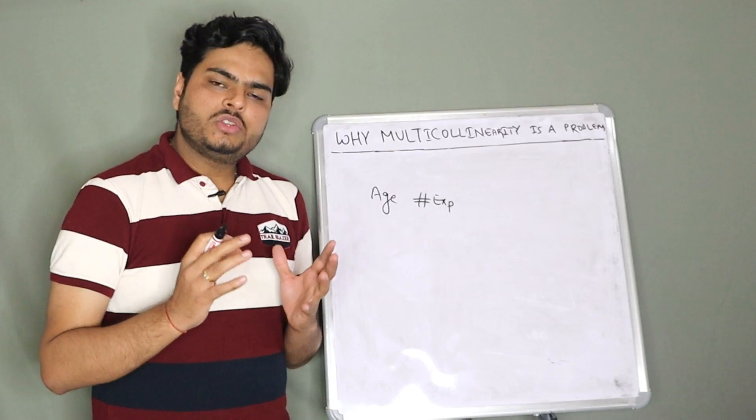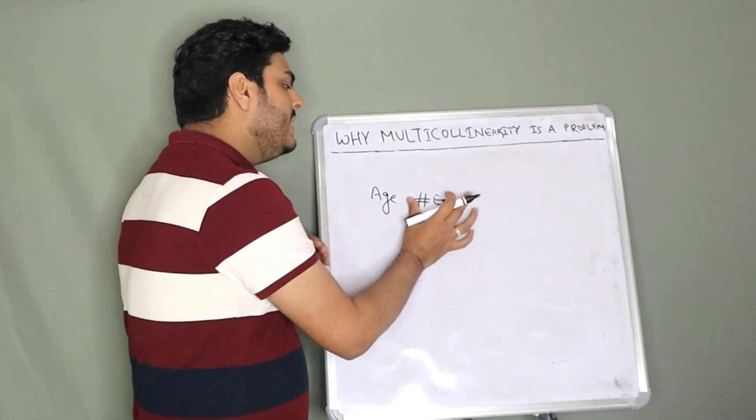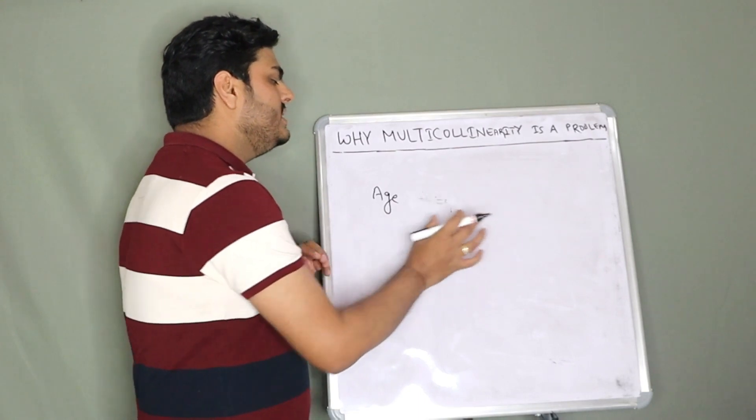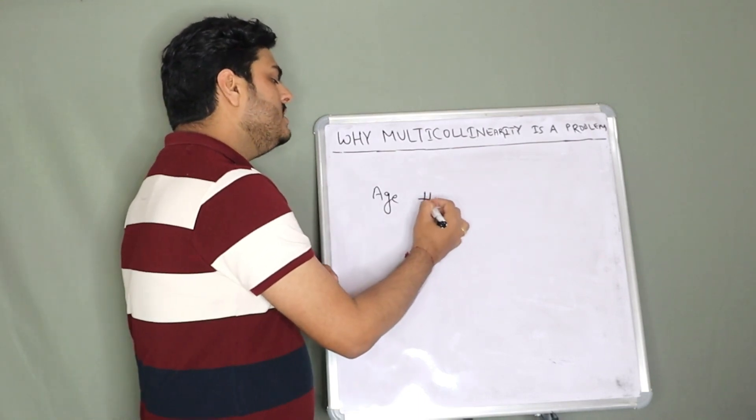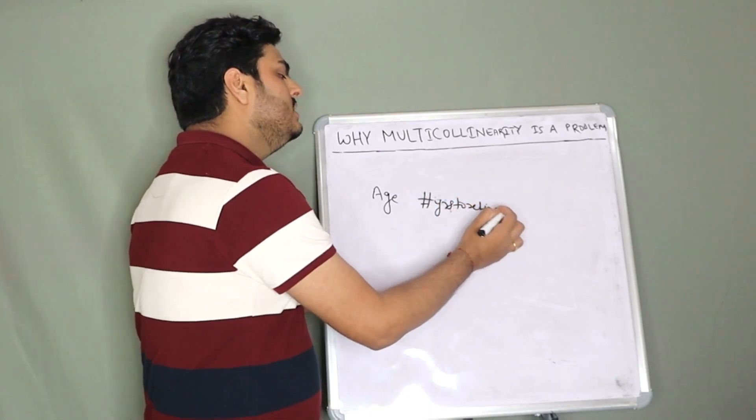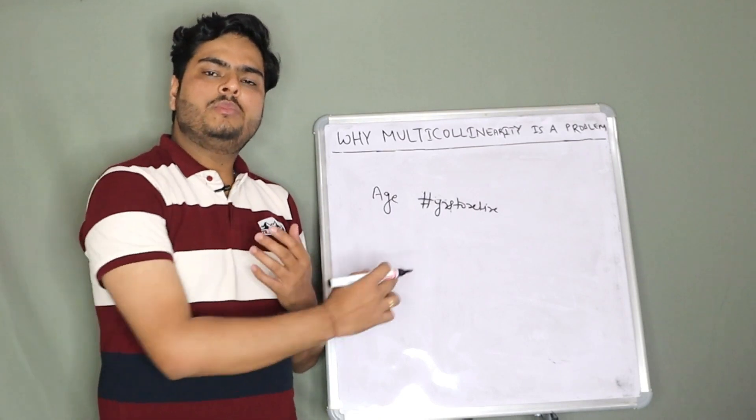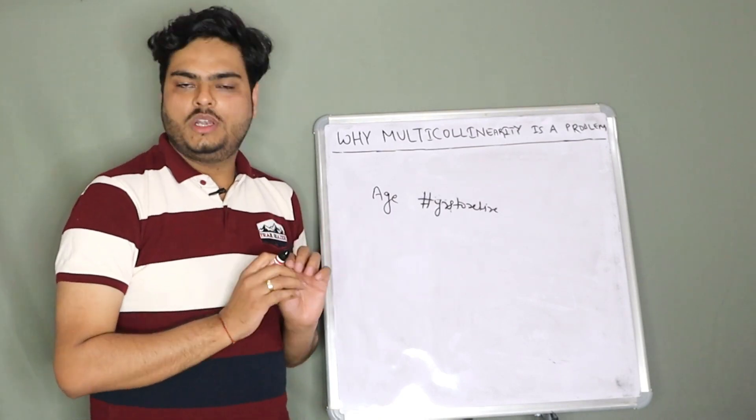There can be negative correlation also. For example, if you say age of a person and years left to retire—let's put an imaginary variable here, number of years to retire. So if age increases, then number of years left to retire will decrease. This is a negative correlation.